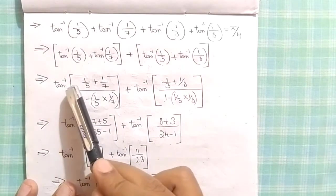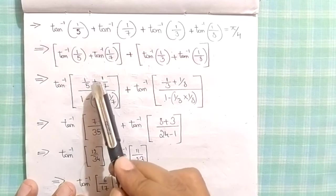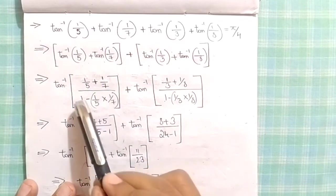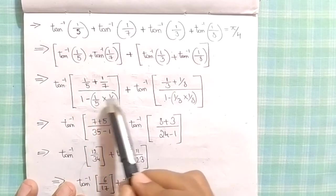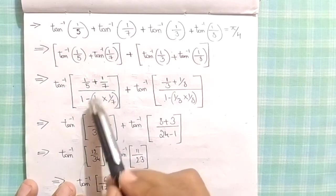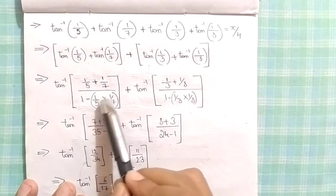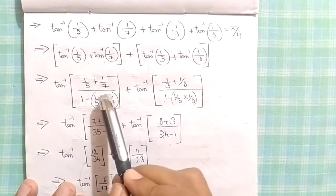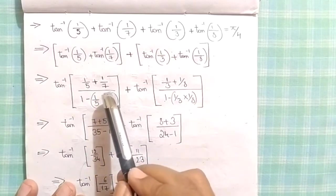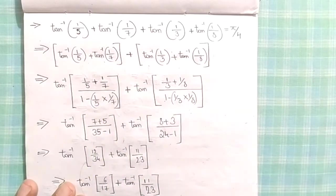Now solving with that formula: tan inverse of (1/5 + 1/7) over (1 minus (1/5 into 1/7)). Here x is 1/5, y is 1/7. Be careful while using the brackets. I have used a big bracket with a small bracket inside.